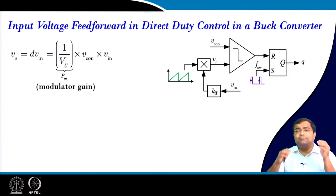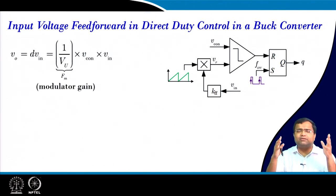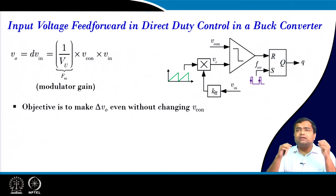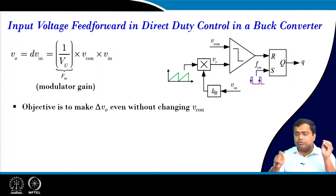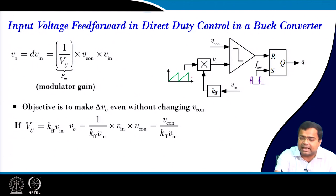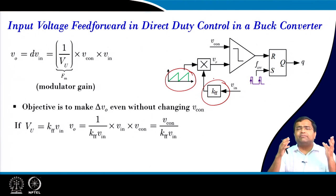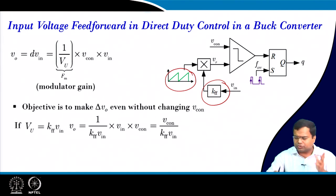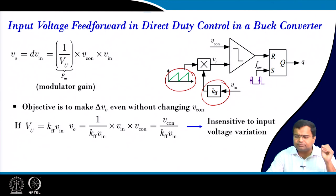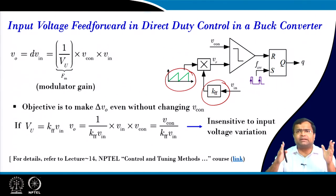We have also discussed input voltage feed forward, because voltage mode control suffers from poor line regulation and audio susceptibility. You can make the output voltage more or less insensitive to input variation in a buck converter by adaptively varying the ramp slope based on the input voltage. This can be implemented by means of a voltage-controlled current source that charges a capacitor to generate the sawtooth waveform, and many commercial ICs use this approach. This aspect is discussed in lecture number 14.